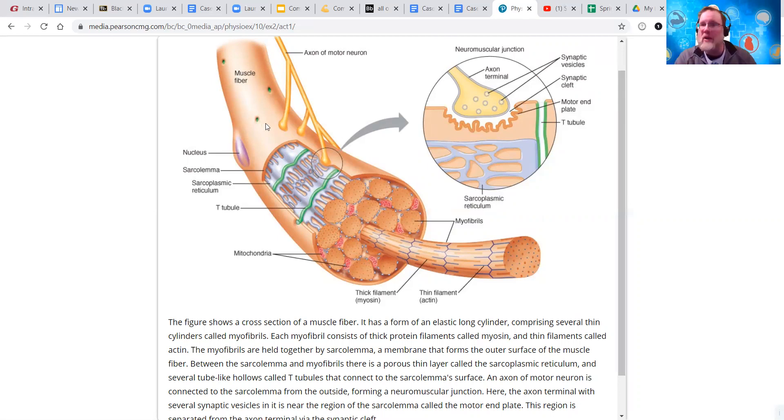All tissues are composed of cells. Muscle tissue is composed of muscle cells, specifically muscle fibers. We see that nerve come in, the neuro part, and then attaching and plugging into the muscle, the muscular part. So, we call this the neuromuscular junction.